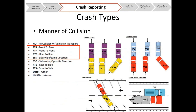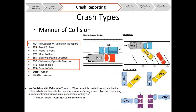The crash report form and F2 help include pictograms for manner of collision to make things easier. These include: front to rear, front to front, rear to rear, sideswipe same direction, sideswipe opposite direction, rear to side, and front to side. The 'no collision with vehicle in transit' category applies when a crash does not involve collision between two or more vehicles — such as a vehicle striking a fixed object or overturning — and includes collisions with animals, pedestrians, or bicyclists, as well as crashes involving ATVs or snowmobiles, which are not considered motor vehicles in transit under Wisconsin statutes.